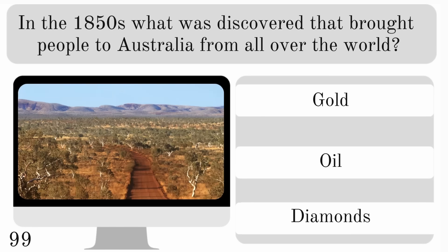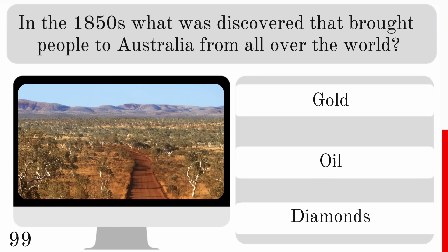In the 1850s, what was discovered that brought people to Australia from all over the world? Gold, oil or diamonds? And the answer is gold.